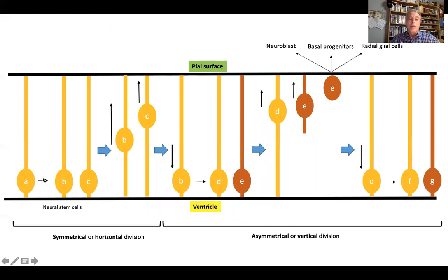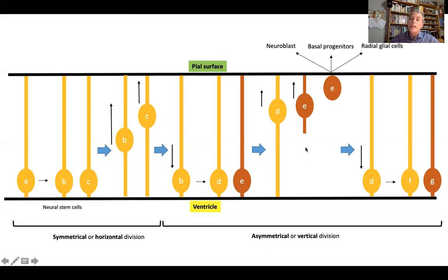This process takes place constantly. Neural stem cells divide by mitosis: A becomes B and C. Once they have undergone mitosis, their nuclei move to the outermost part of the wall. One nucleus comes back down, keeping both ends of the cytoplasm attached, and divides again. In this case, D goes up into interphase, and E detaches from the ventricular zone, moves toward an external area, and may become a neuroblast, basal progenitor, or radial glial cell. The process is then repeated.